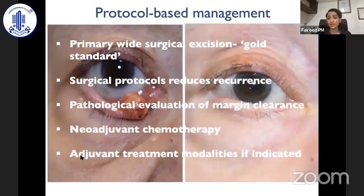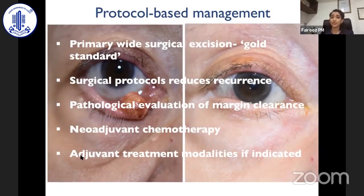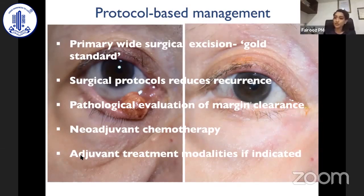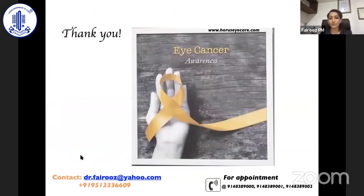In conclusion, protocol-based management in sebaceous gland carcinoma is very important. We consider primary wide surgical excision as the gold standard. Surgical protocols must be obeyed because this reduces recurrence and improves the lifespan of the patient. Neoadjuvant chemotherapy and radiotherapy do have a place in the management of sebaceous gland carcinoma when indicated. Thank you for your patient listening — I can take any questions.